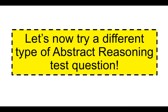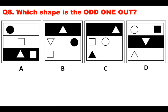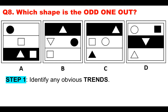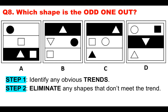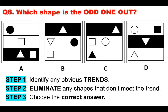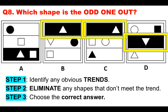Let's now try a different type of abstract reasoning test question: which shape is the odd one out? Step one: identify any obvious trends. Eliminate any shapes that don't meet the trend, then choose the correct answer. We can see that on B, C and D there is a black band at some stage with one triangle in it. The correct answer is A because it doesn't have that in it.